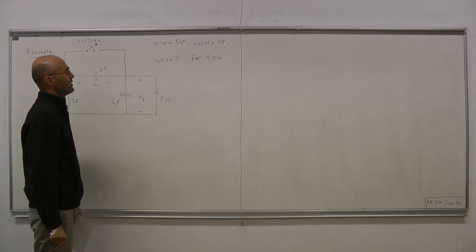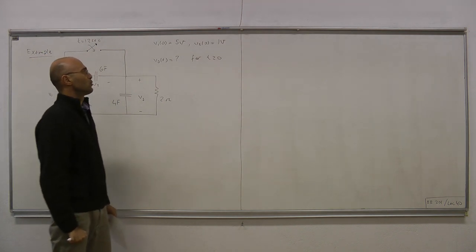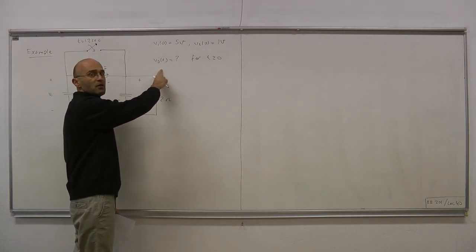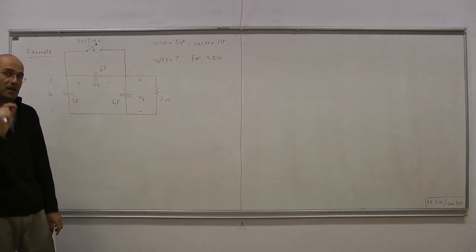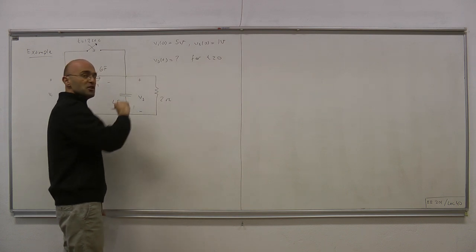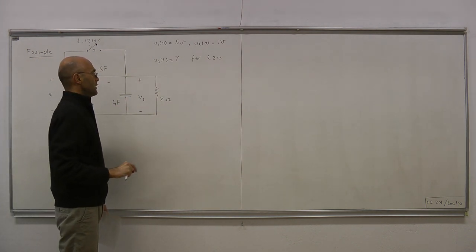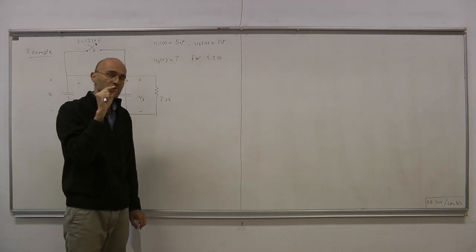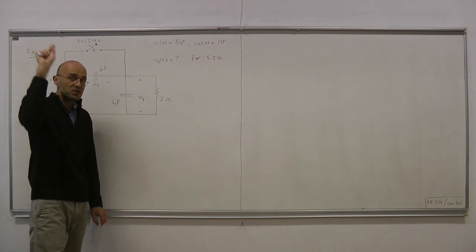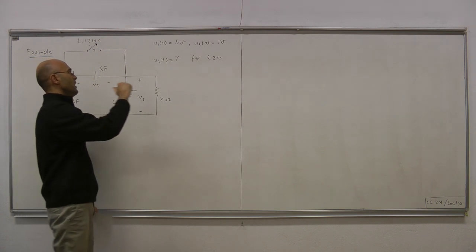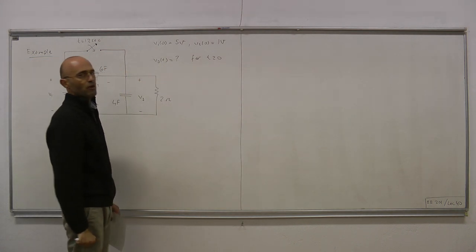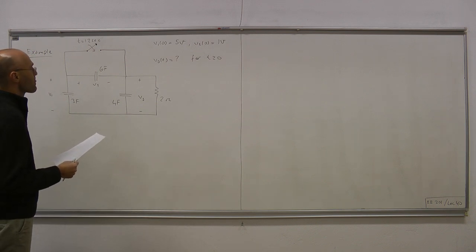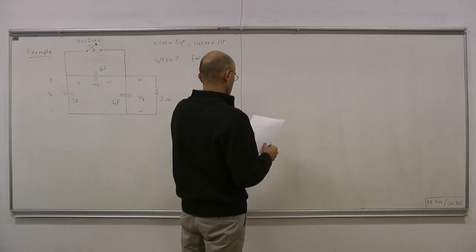This is a three-stage problem. First we are going to figure out what happens between time t equals 0 and 12 minus. Then we are going to figure out the discontinuities at t equals 12 seconds — the analysis of the interval from t equals 12 minus to 12 plus. Then the third stage is from t equals 12 plus to infinity.